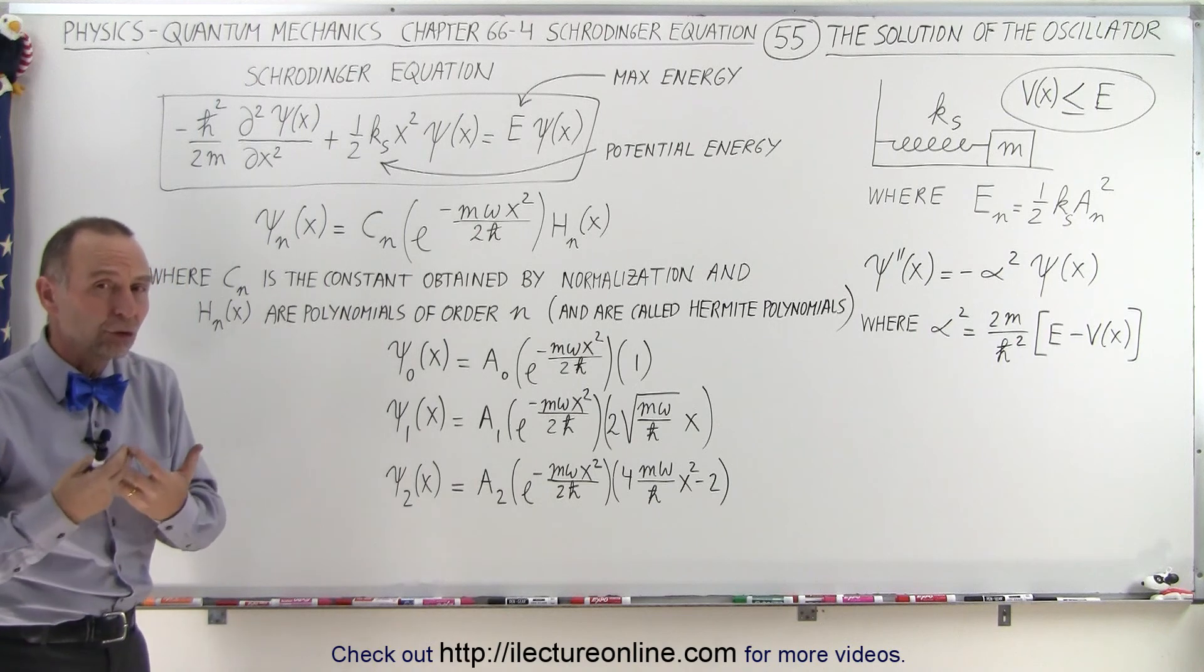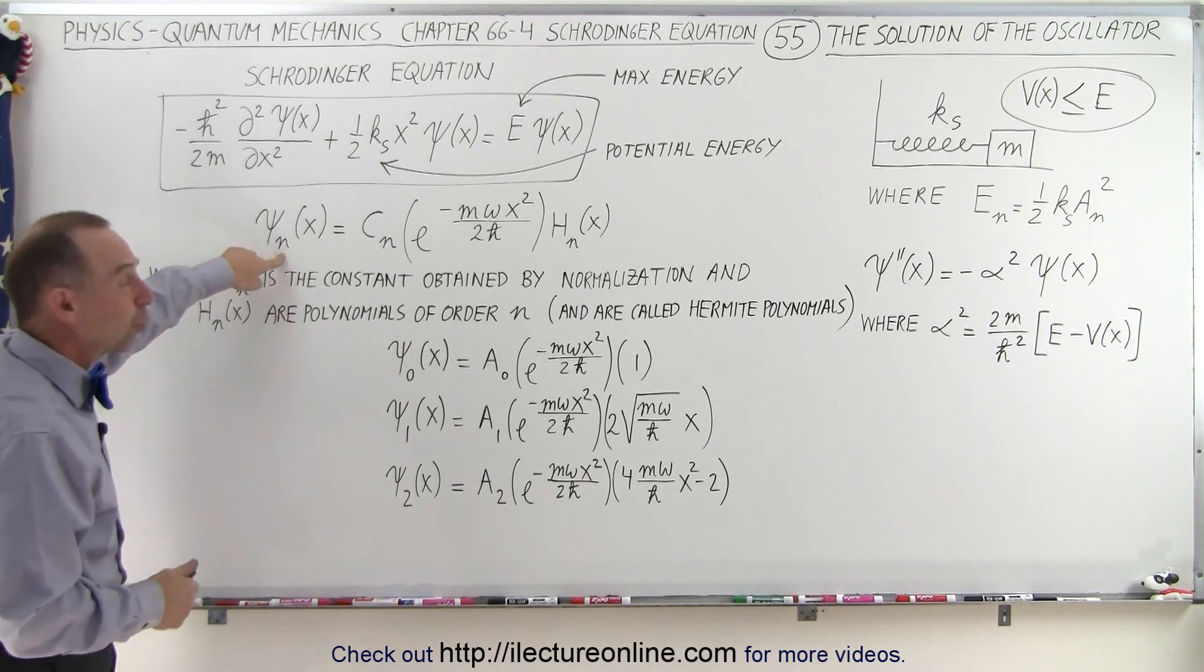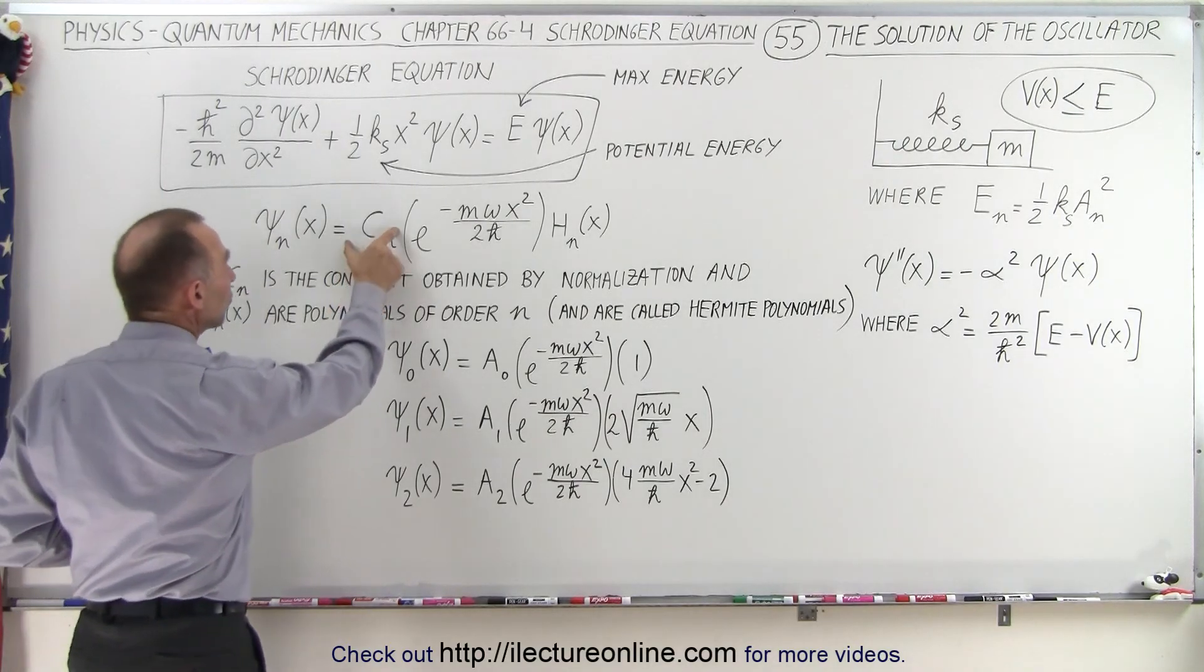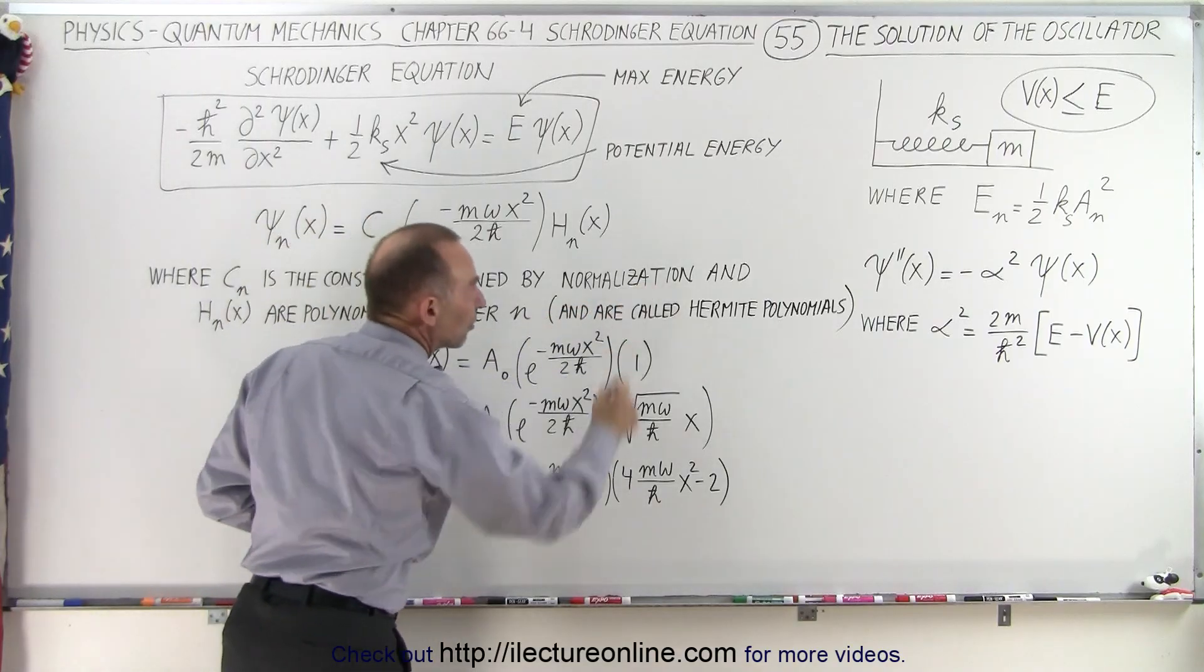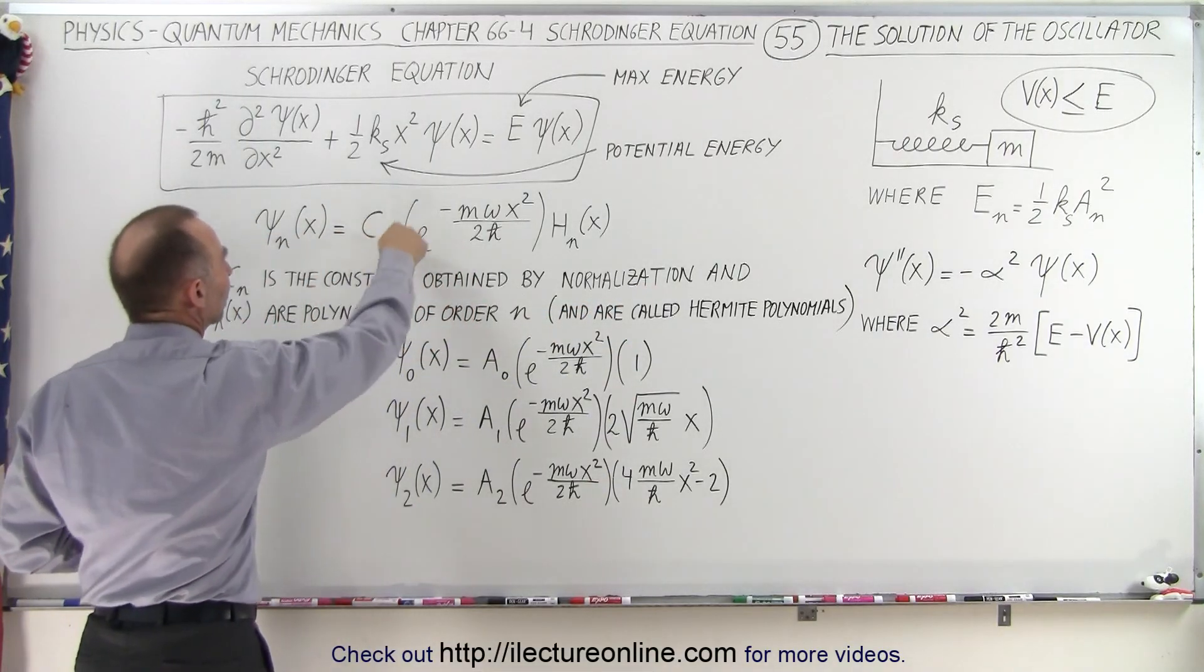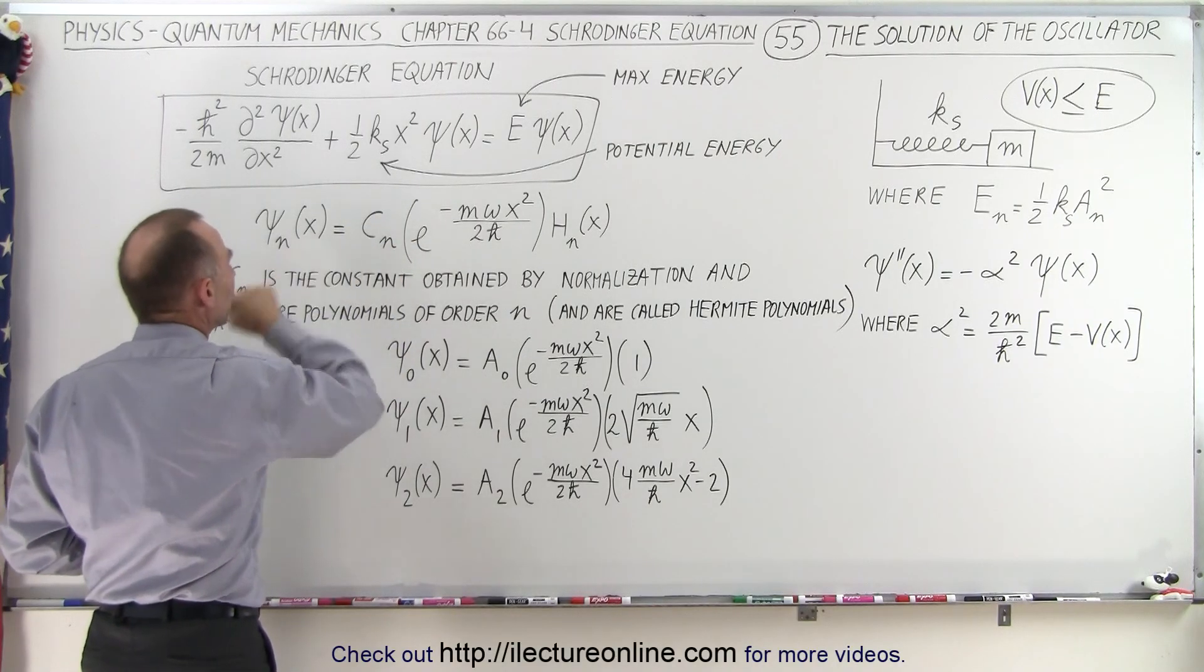Now what does the solution look like? Well, it comes in three parts. It's quantized depending upon the quantum state. We have first a constant, which will be found by normalizing the function. We'll show you how to do that in a future video. The constant will depend upon the quantum state.